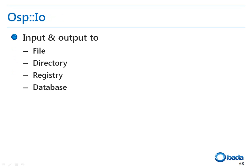The I/O namespace provides functions to input and output data that is saved as types such as files, directories, registries, and databases.